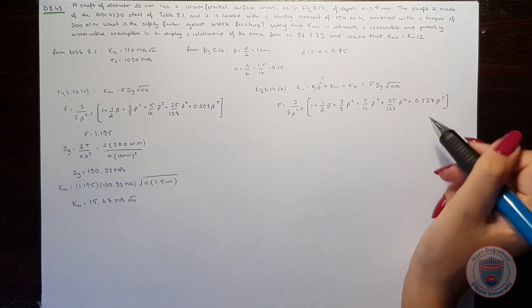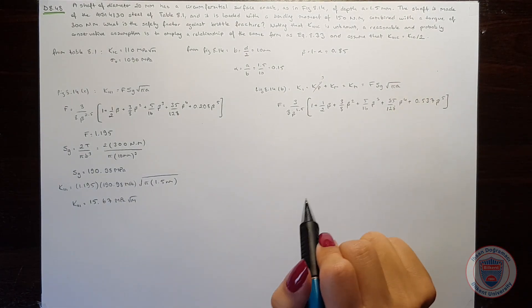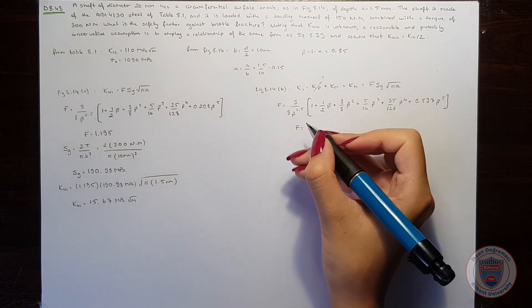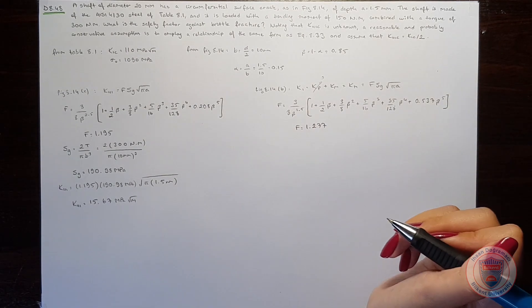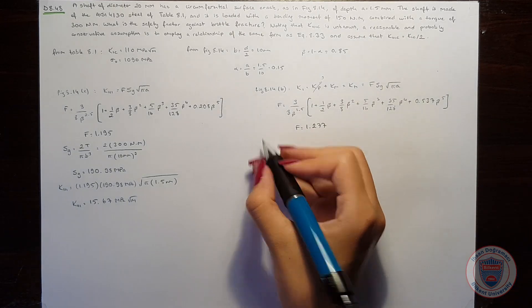When we calculate for beta equals 0.85, we obtain F equals 1.277. Let's calculate Sg.